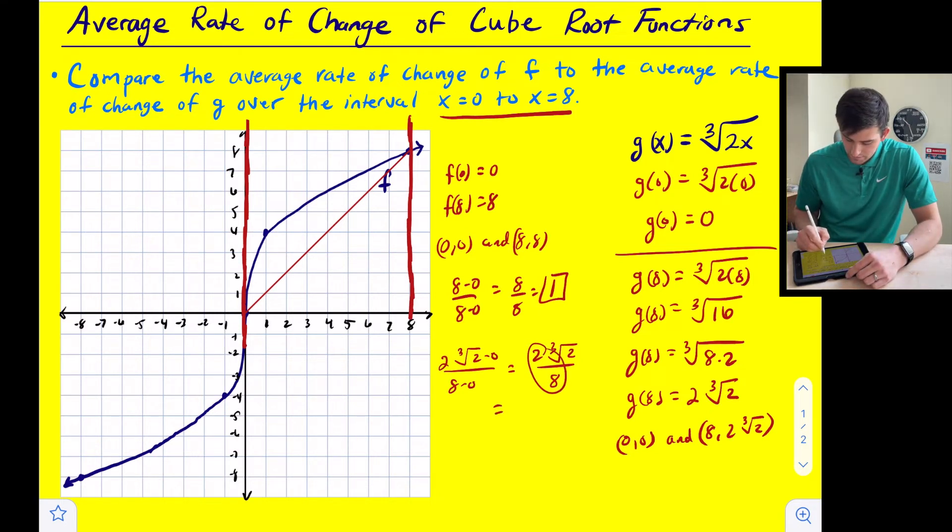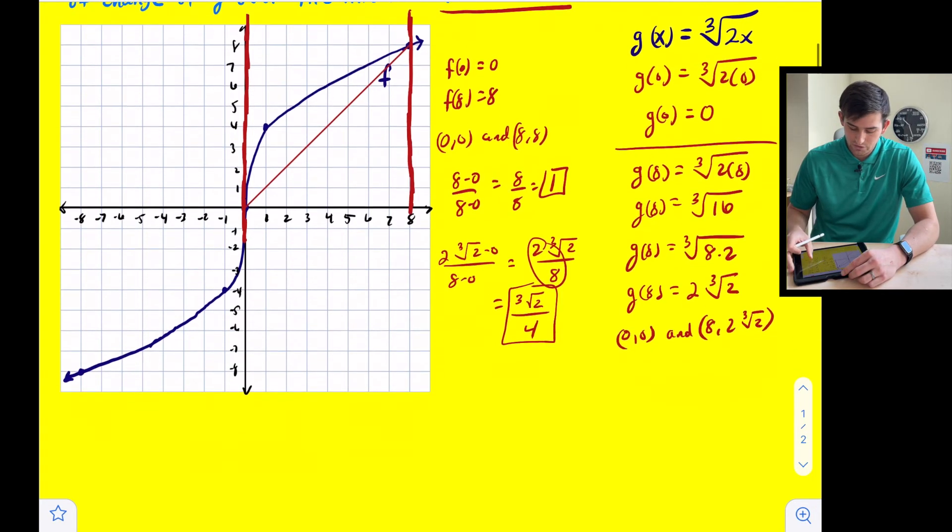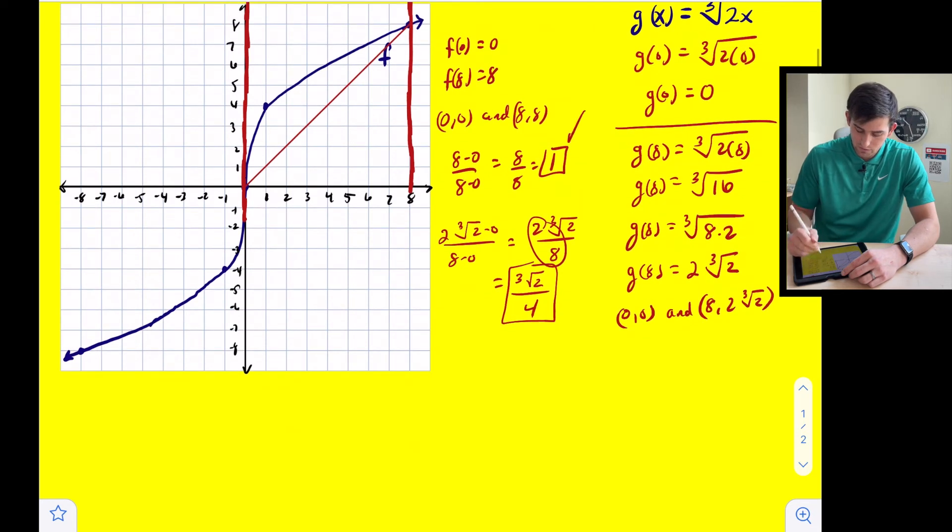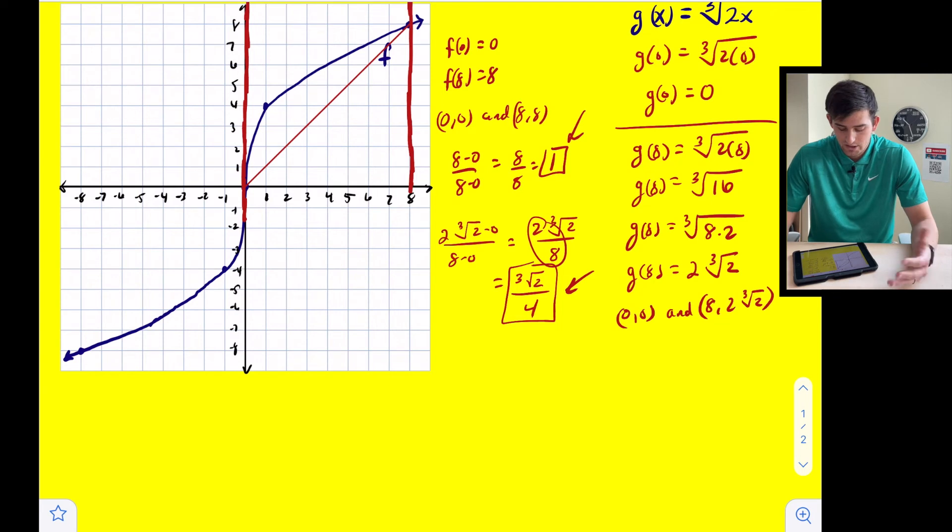And this 2 and the 8 here will simplify. So this ends up giving us, excuse me, the cube root of 2 over 4. Okay, so now what we're going to do with our two slopes. So here was 1 and here was cube root of 2 over 4, our two average rates of change. We're going to compare them.